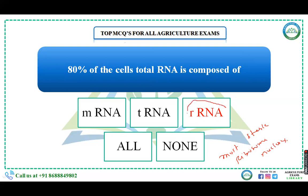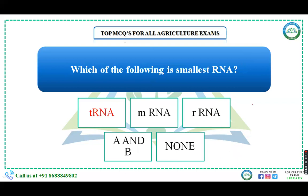Which of the following is the smallest RNA? The answer is tRNA, that is transfer RNA, which constitutes 10 to 15% of the total RNA. It is synthesized by DNA in the nucleus, and it is also known as soluble RNA as well as adapter RNA. So the smallest RNA is tRNA.